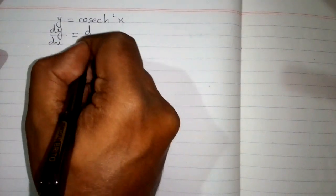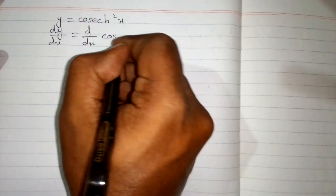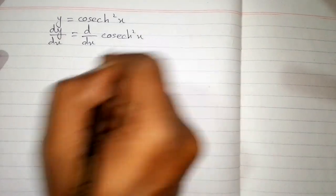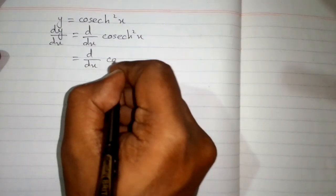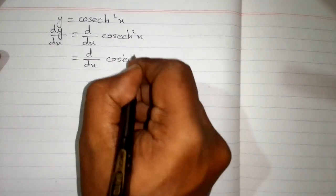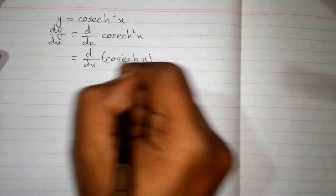So we have dy/dx equals d/dx of hyperbolic cosec squared x. This can be written as d/dx of hyperbolic cosec x whole squared.